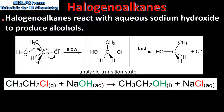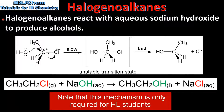Next we look at the reaction of a halogenoalkane and a nucleophile. Halogenoalkanes react with aqueous sodium hydroxide to produce alcohols. Here we have the reaction of chloroethane to produce ethanol. The hydroxide ion is acting as a nucleophile, replacing the chlorine atom bonded to the carbon atom.